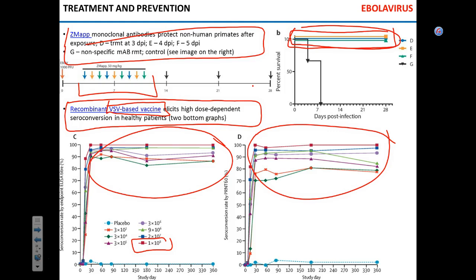In ring vaccination, if someone in a classroom tests positive for Ebola, everyone who was in contact with that person gets vaccinated. Ring vaccination protects people who may have been exposed or may be exposed in the future. It is a pretty effective method, though the problem is people failing to report the disease or reporting it too late, allowing the virus to spread.